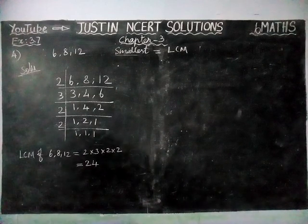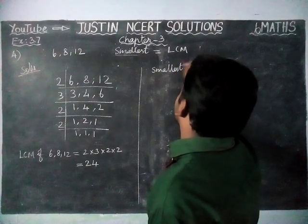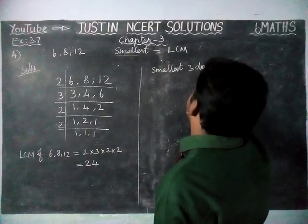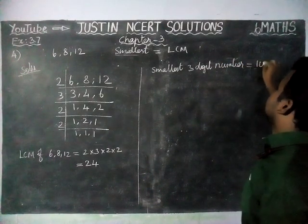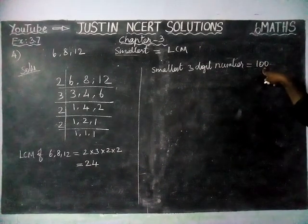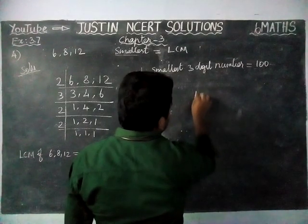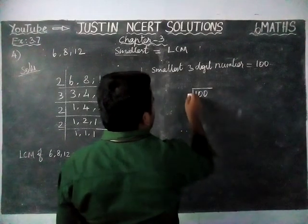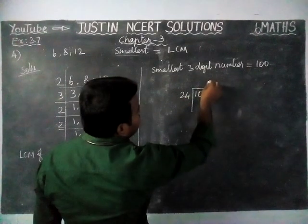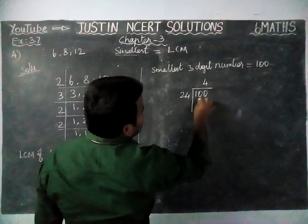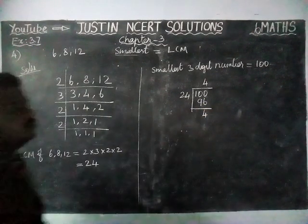Now, we have to find the smallest three-digit number. The smallest three-digit number is equal to 100. We are going to divide 100 by 24. In 100, we have 4 twenty-fours, that is 96. The remaining is 4.